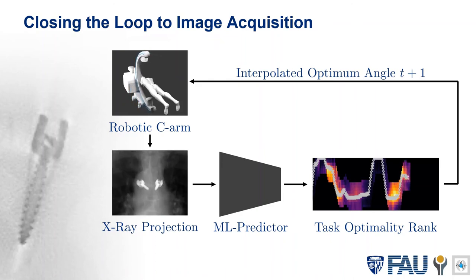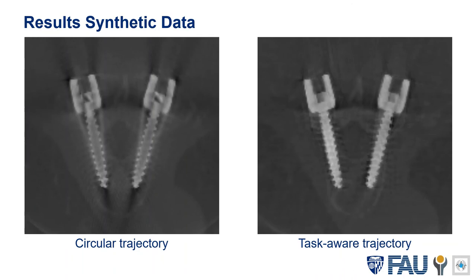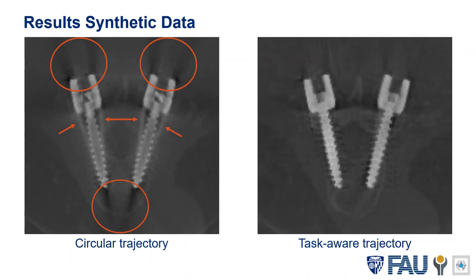Coming to experiments, we run the first set of experiments on synthetic data. On the left side, we show the reconstruction from a circular trajectory. On the right side, the reconstruction from a task-aware trajectory is visible. The task-aware trajectory exhibits much less metal artifacts, visible as streaking around the screws. Furthermore, the screw is reconstructed more as a homogeneous object, which fits the actual properties of the screw, and therefore shows that the reconstruction quality is better.